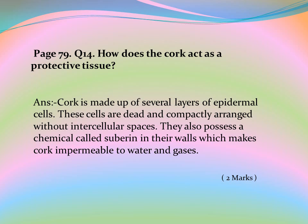Page 79, Question 14: How does the cork act as a protective tissue? Answer: Cork is made up of several layers of epidermal cells. These cells are dead and compactly arranged without intercellular spaces. They also possess a chemical called suberin in their walls, which makes cork impermeable to water and gases.